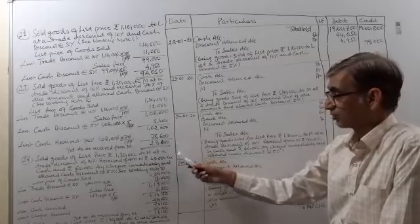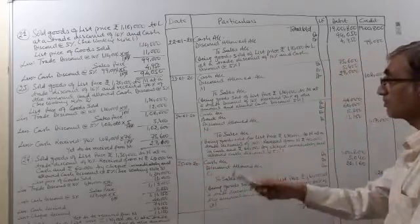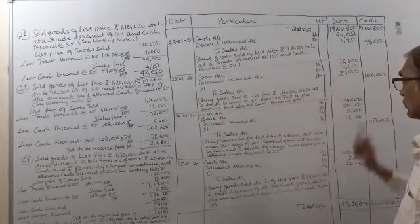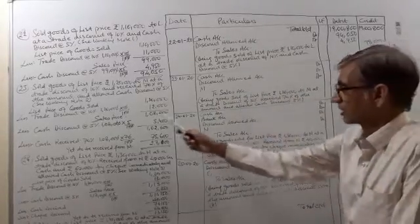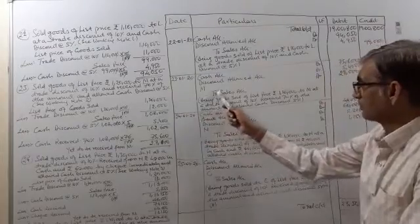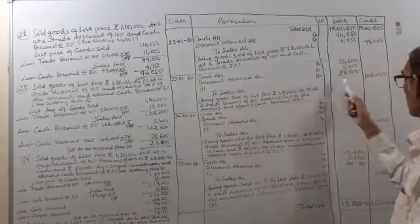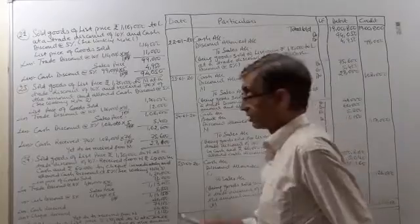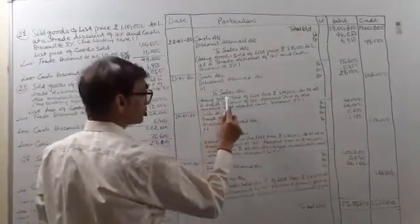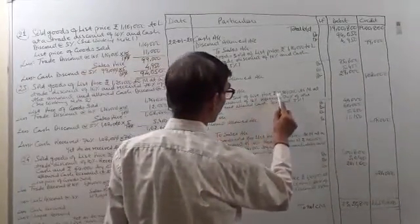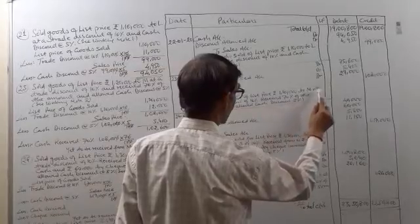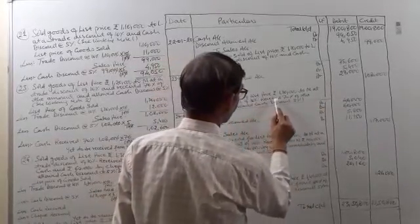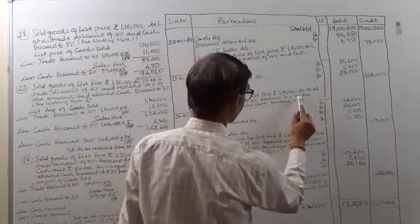M becomes a debtor for rupees 27,000 yet to be received, so M will be debited 27,000. The sales price was 1,08,000 and goods were sold for rupees 1,08,000, so sales account is credited 1,08,000. Narration: goods sold of list price rupees 1,20,000 to M at a trade discount of 10%, received 70% of the amount, and allowed cash discount 5%.